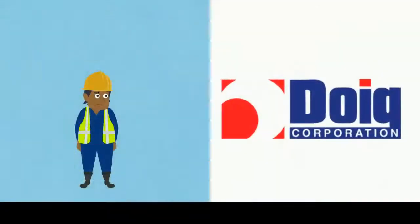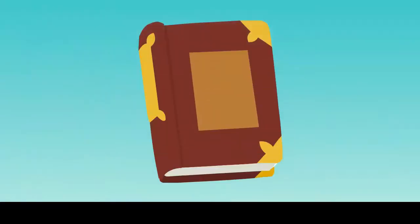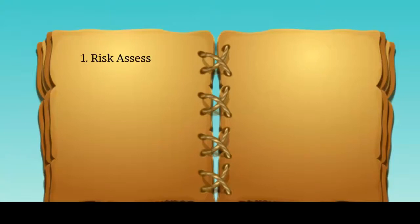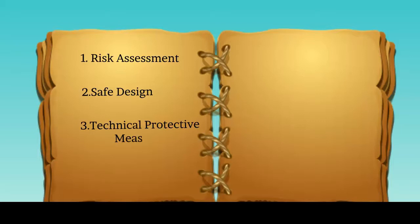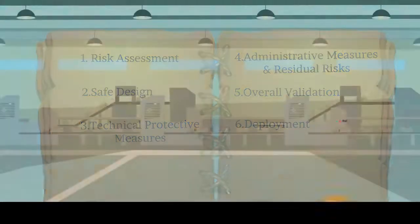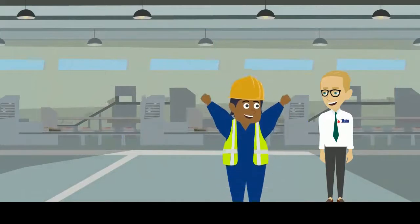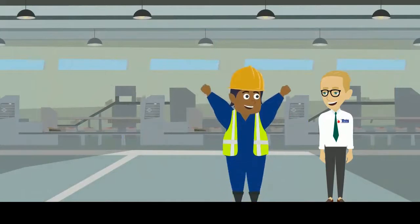Luckily, DOEG Corporation has the perfect solution: the six steps to a safe machine white paper, that covers 1. Risk Assessment, 2. Safe Design, 3. Technical Protective Measures, 4. Administrative Measures and Residual Risks, 5. Overall Validation, 6. Deployment.